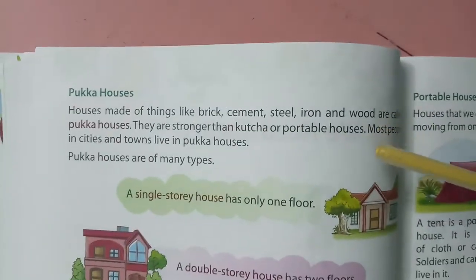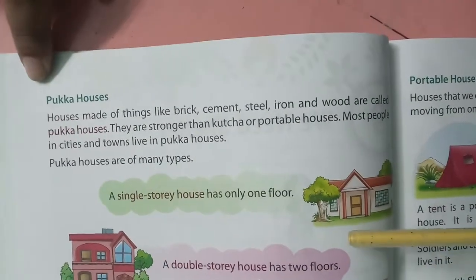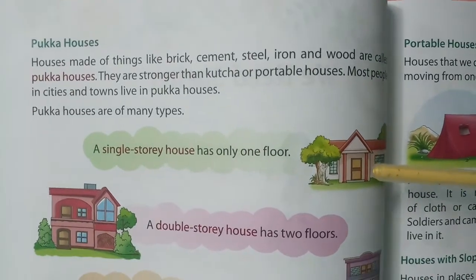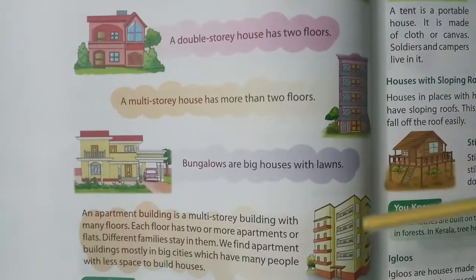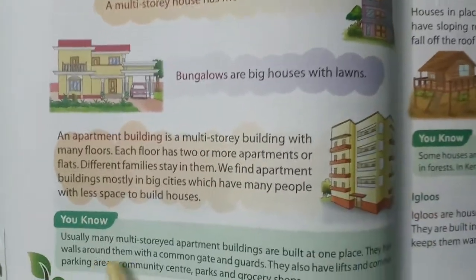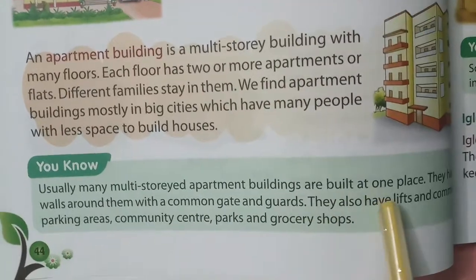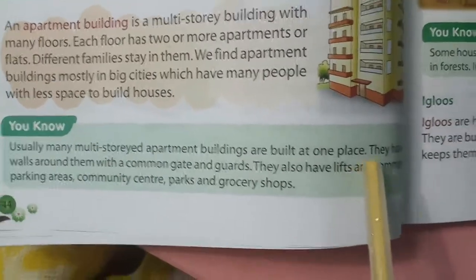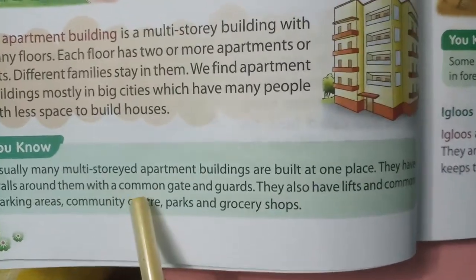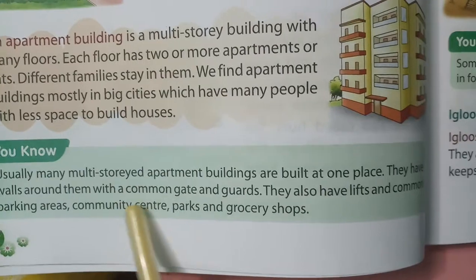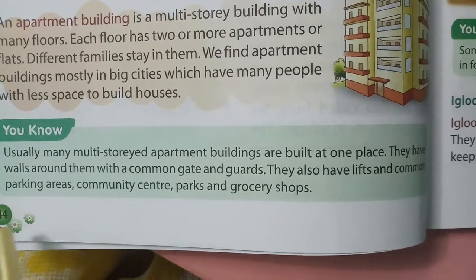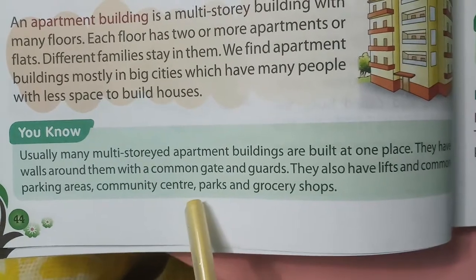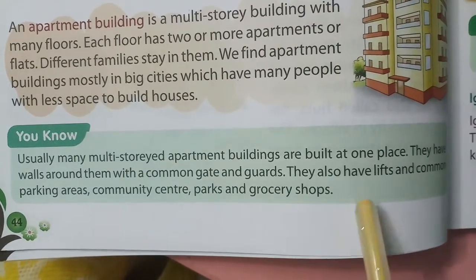Paka houses need brick, cement, steel, iron, etc. There are many types: single storey, double storey, multi-storey, bungalows, and flats. Usually many multi-storey apartment buildings are built at one place. They have walls around them with a common gate and guards. They also have lifts, common parking areas, community centers, parks, and grocery shops — this is what is now commonly known as a complex.